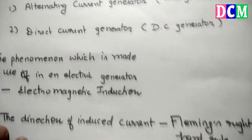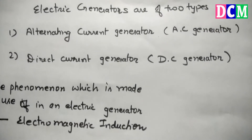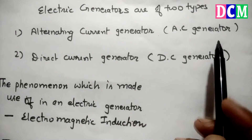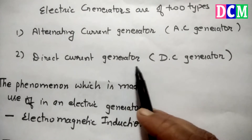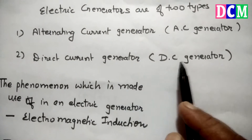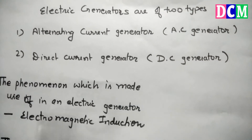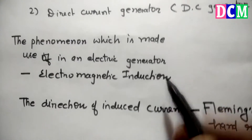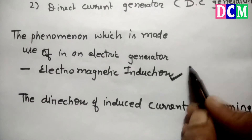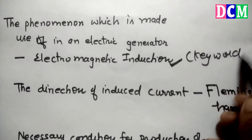We have classified the electric generator in two parts: one is the alternating current generator, in short AC generator, and the other is the direct current generator, called DC generator. The phenomenon made use of in an electric generator is electromagnetic induction — this is a key word.